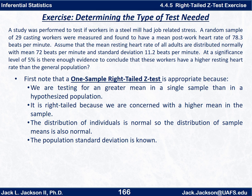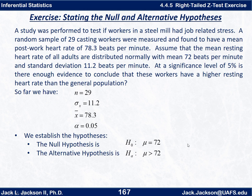That's basically our alternative hypothesis. The distribution of individuals is normal in this case, so the distribution of sample means is also normal. Although with a sample size of 29, unless the distribution was highly skewed, bimodal, or had lots of outliers, 29 is close to the sample size that would work even if it wasn't quite so normal. But with individuals being normal, the sample size doesn't really come into play. We're also told the population standard deviation is known, so those conditions are enough to use the z-test.